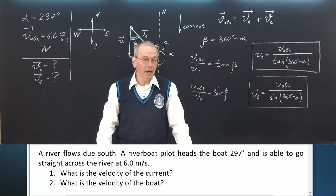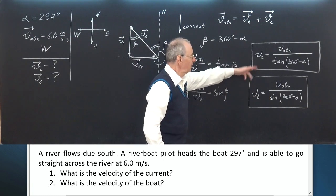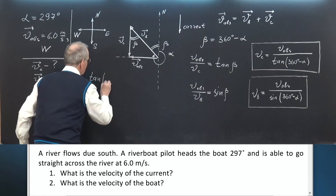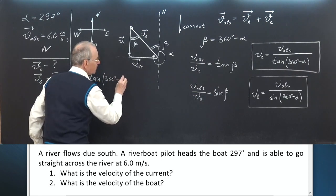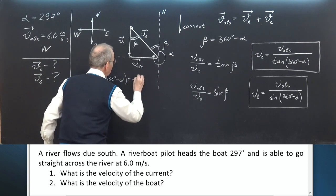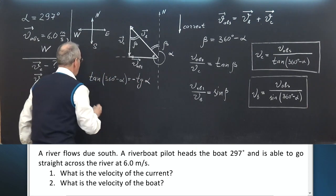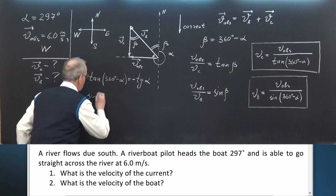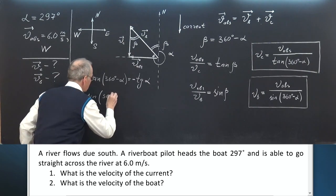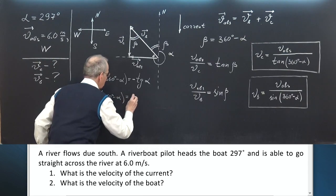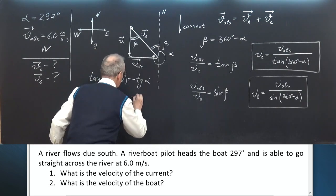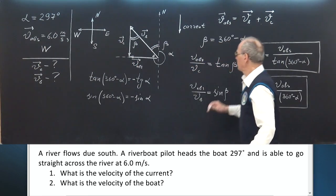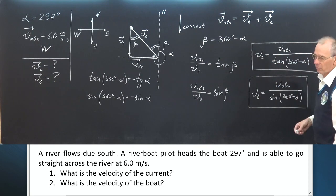By the way, if you know reduction formulas, you can write the same in another way. For example, tangent of (360 degrees minus alpha) equals minus tangent alpha, and sine of (360 degrees minus alpha) equals minus sine alpha. You can use these formulas as well, but it seems to me that the previous forms are more convenient to use.